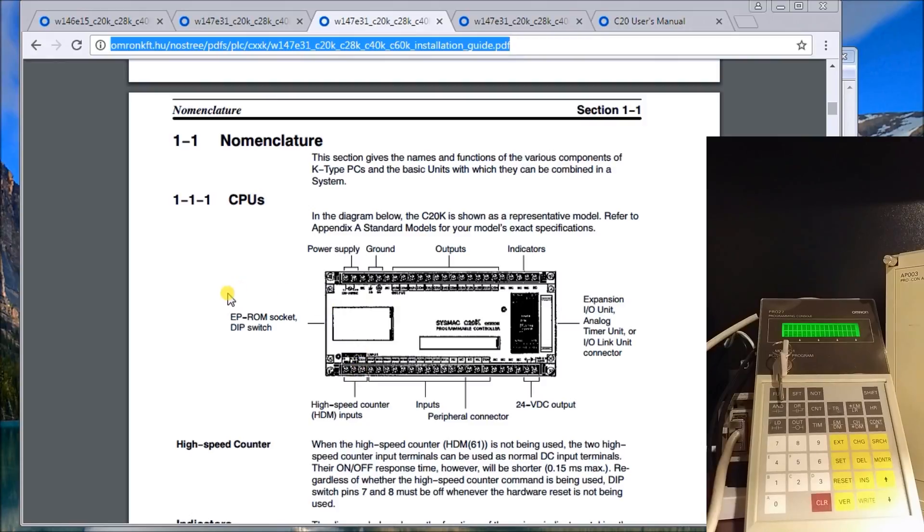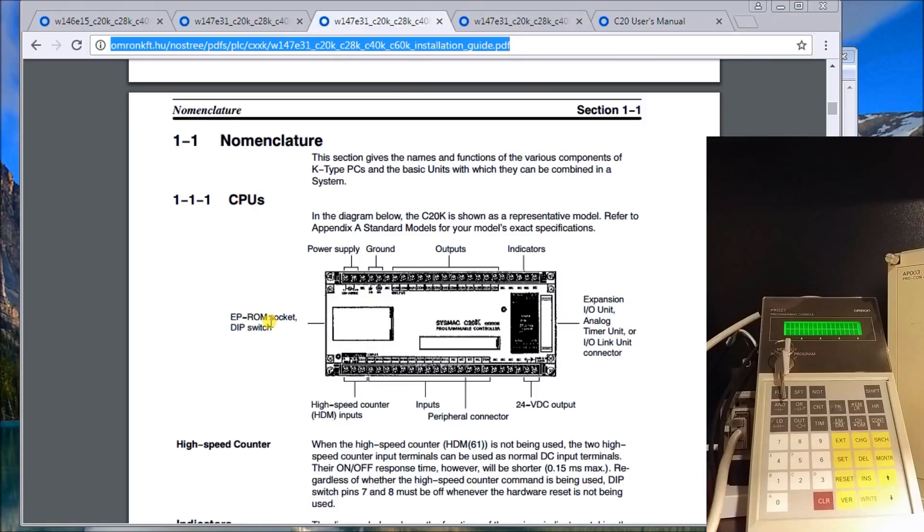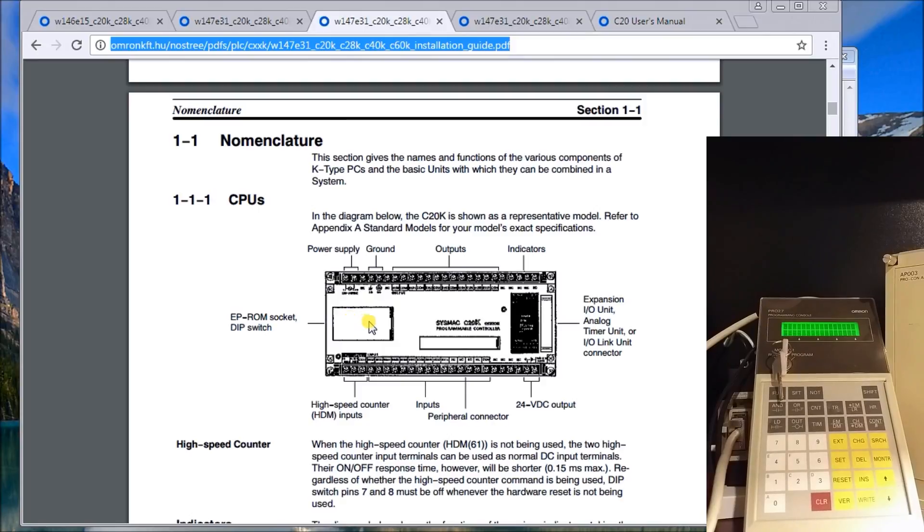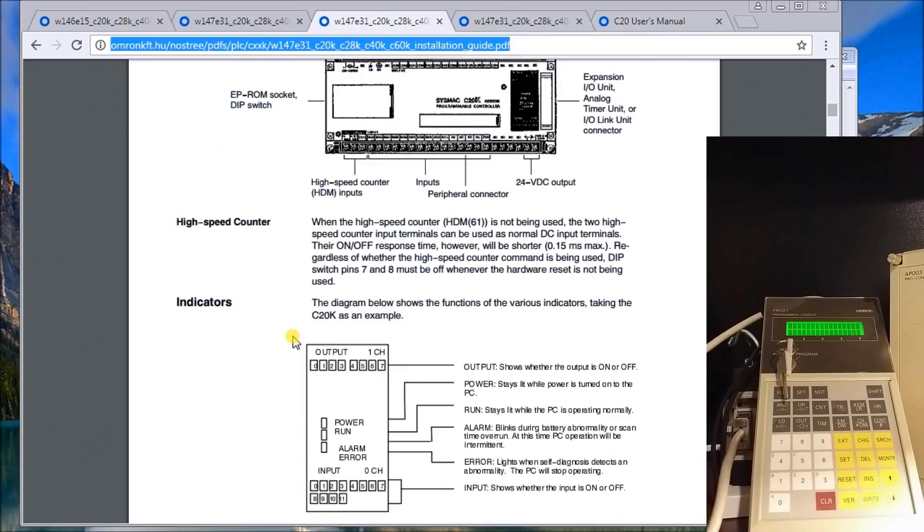Then we have some high speed counters. Under here we have the DIP switches and the EEPROM socket. Now the memory itself is stored in this unit in RAM, typically a RAM, and these DIP switches here will actually select where that memory is.